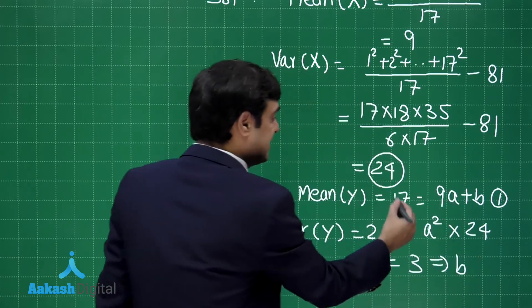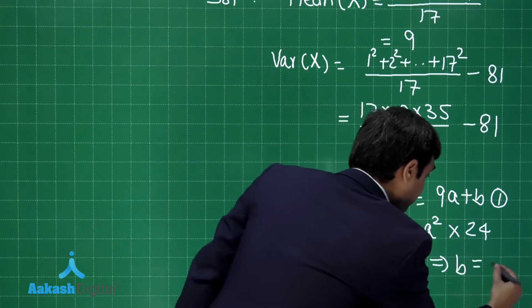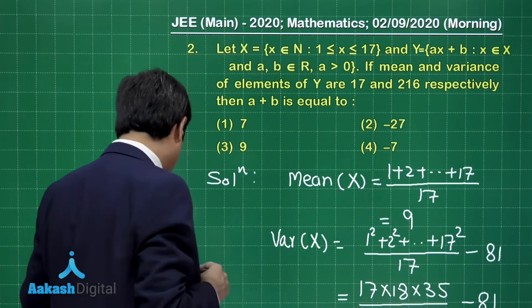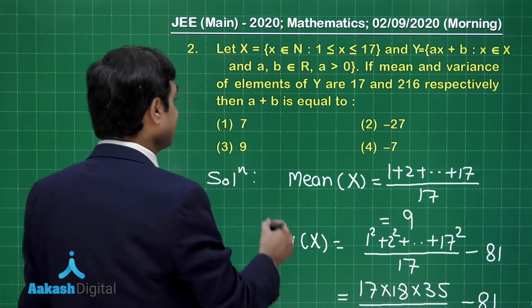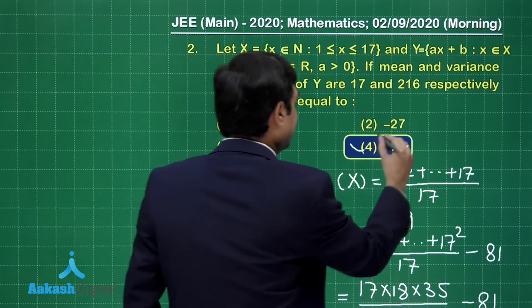Put the value of a back here to get the value for b. We write 17 = 27 + b, so b = -10. What is required? a + b = 3 - 10 = -7. Yes, the correct answer for this question is option number 4.